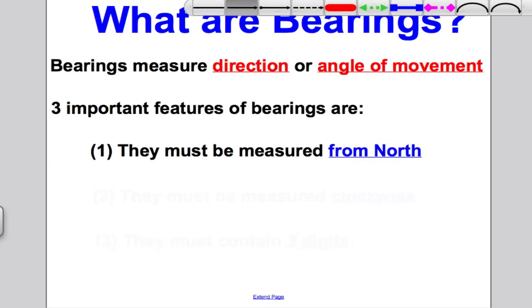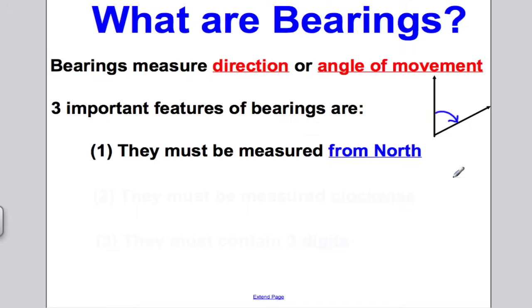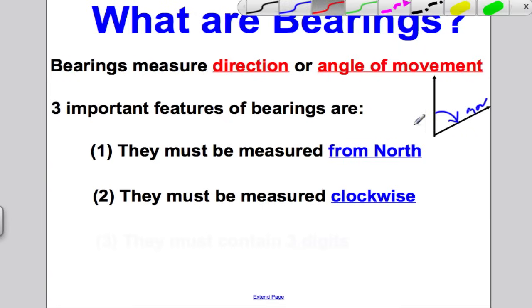The first thing is that bearings always are measured from north. They're measured from due north. So that means if you're measuring that direction, you have to measure how far it is from the north. So this is your movement here. You want to measure how far from the north. The second thing is that they must be measured in a clockwise direction. You never measure anti-clockwise. You always measure clockwise from north.